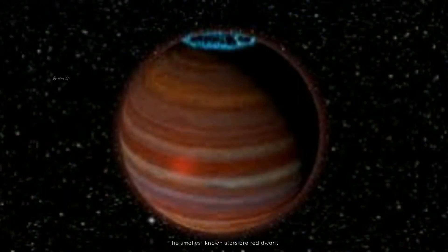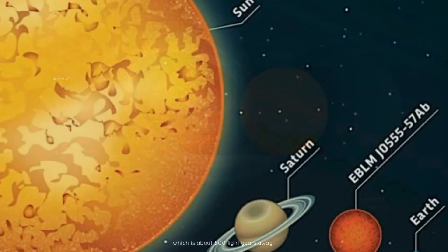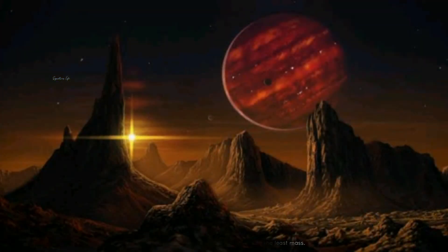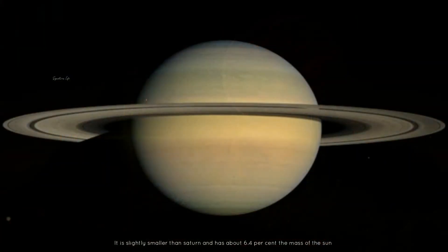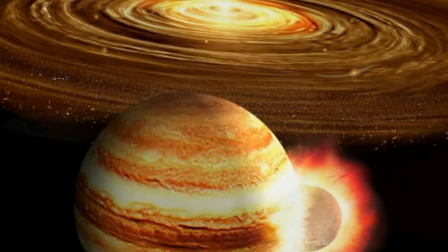The smallest known stars are red dwarfs. EBLM J0555-57AB, which is about 600 light years away, is the current record holder for the star with the least mass. It is slightly smaller than Saturn and has about 6.4% the mass of the Sun or about 70 times the mass of Jupiter.